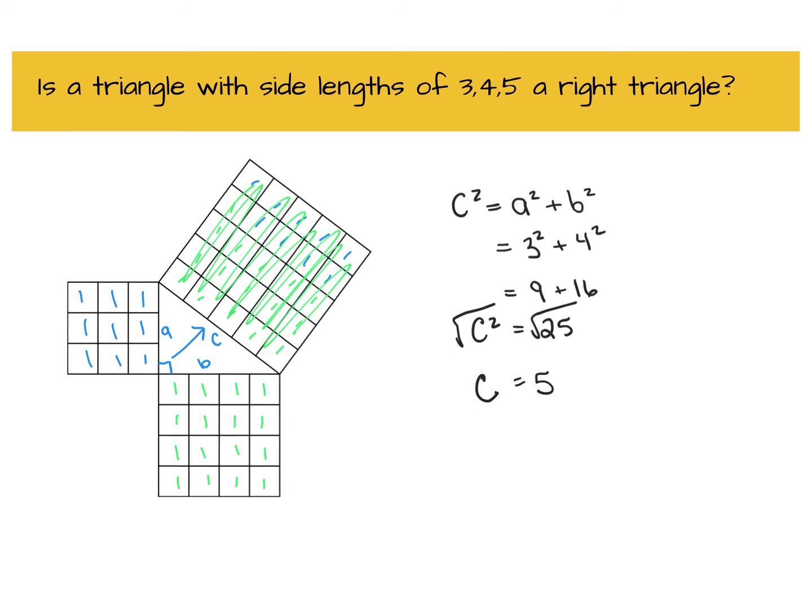And because we can see over here that C does have a side length of 5, then yes, it is a right angle triangle. Let's look at another example to see how this works.